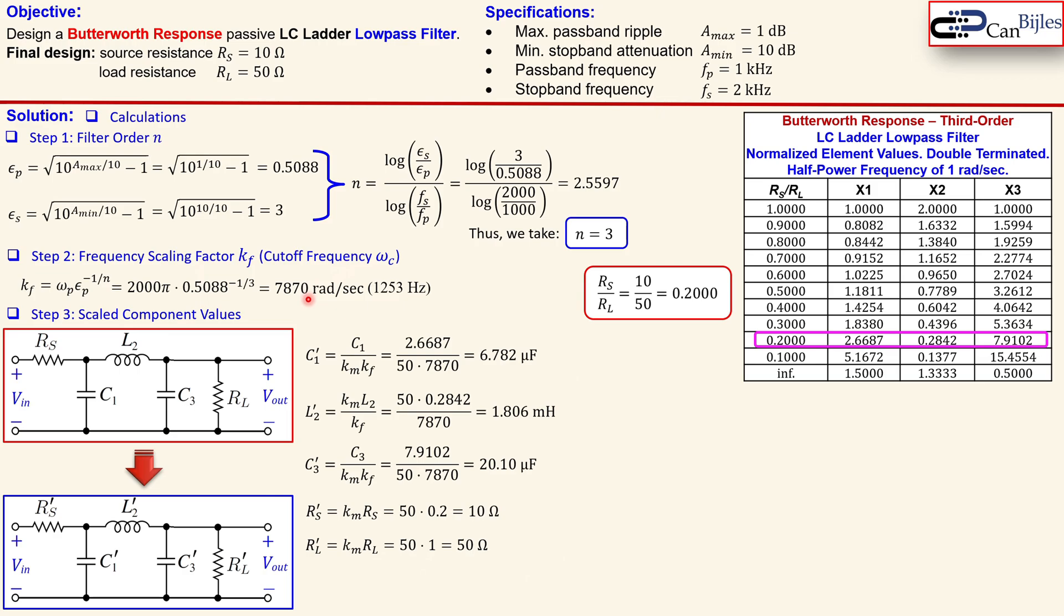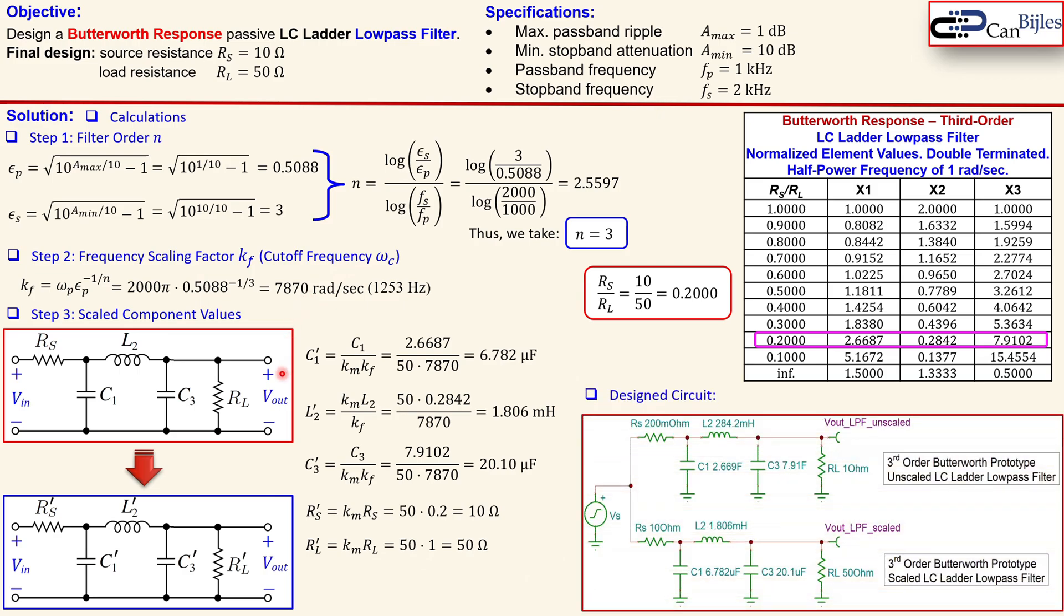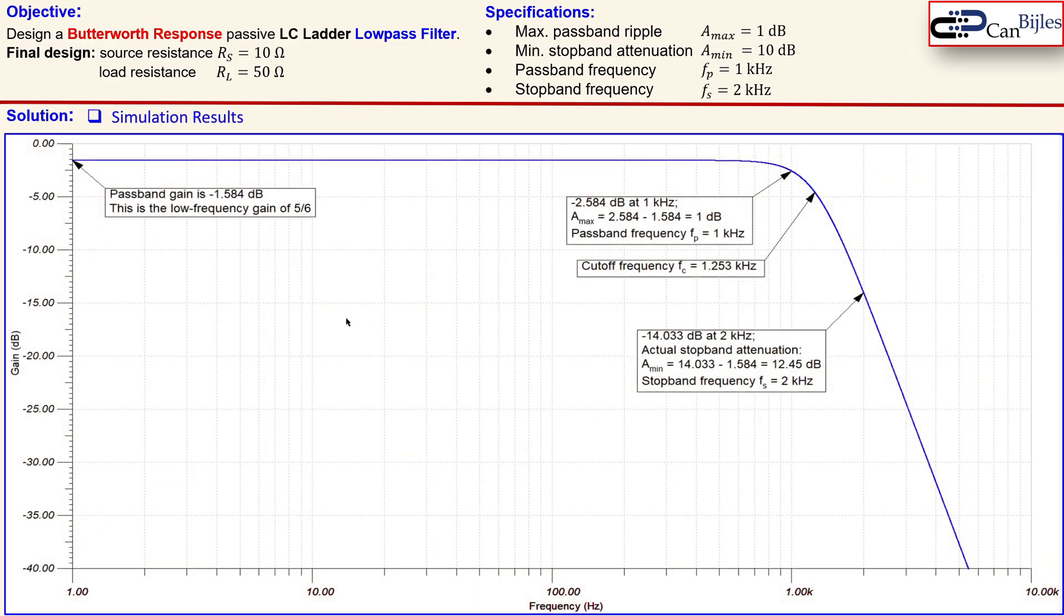So these are the values we need to have in our final design circuit. The design circuit in the TINA TI SPICE is shown here. This is the scaled up version and this is the unscaled prototype version. You see also the values here, 2.996 farads, all from the table. Let's now go to the simulation results.